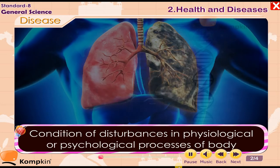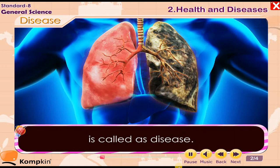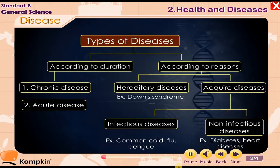Disease: A condition of disturbances in physiological or psychological processes of the body is called a disease. Each disease has its own specific symptoms. Types of diseases — according to duration: 1.